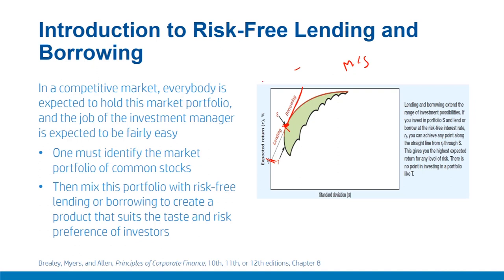Mixing this market portfolio S with the risk-free asset in different combinations generates various portfolios suiting different investor risk preferences. This is referred to as the two-fund theorem or separation theorem — meaning the decision to select portfolio S is independent of the investor's risk preference. Whether investors are risk-taking or risk-averse, they can be served with a suitable instrument just by mixing portfolio S with the risk-free instrument.